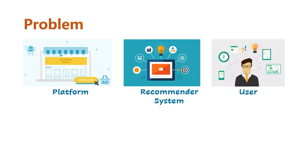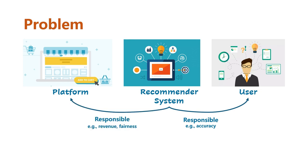Here is the problem we want to solve. A recommender system plays the role of a bridge between the platform and the user. To build a responsible system, it should be responsible to users, which means giving personalized and accurate recommendations. Besides, it's required to be responsible to the platform — meaning the system should benefit the platform's revenue, alleviate bias, and ensure fairness between various information providers.